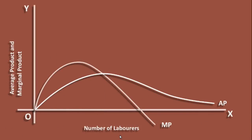Apart from this, students must understand a few finer points about average product and marginal product curves. Look at the graph. Beyond the maximum point of the marginal product, marginal product decreases, but average product continues to increase. This is because marginal product is still greater than average product. When six laborers are employed, marginal product is falling, but average product is still increasing — average product is 5 units but marginal product is 8 units. Since marginal product is greater than average product, average product keeps on increasing in this region.